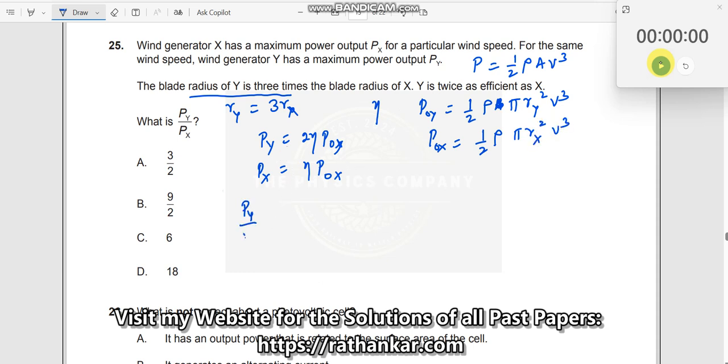So therefore, if I write PY by PX, what do I get? I write 2 eta into half rho pi RY squared V cubed, divided by eta into half rho pi RX squared into V cubed. I just substituted the values.